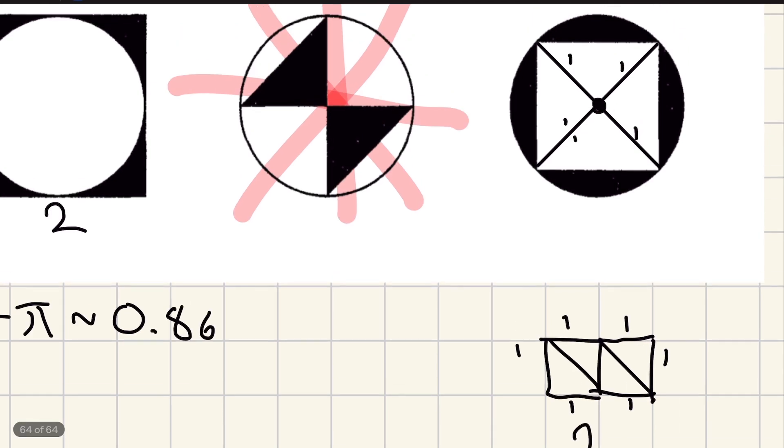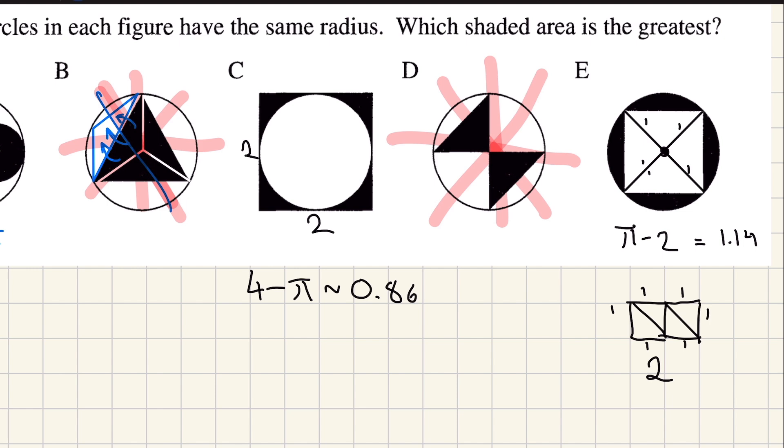So then you know that this area here is going to be pi minus two, which is about 1.14, which is certainly less than half of pi. So pi minus two.